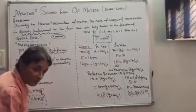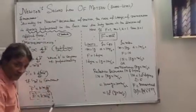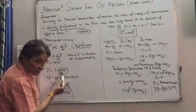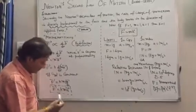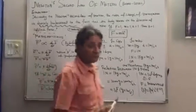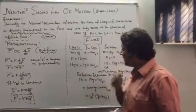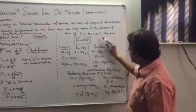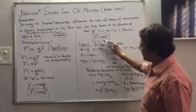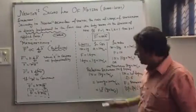Force can be written as F equals K d/dt of V, F equals Kma. Now, if F equals 1, m equals 1, a equals 1, then K equals 1, and F equals ma.